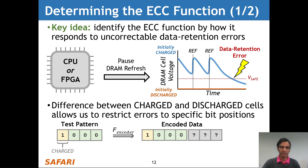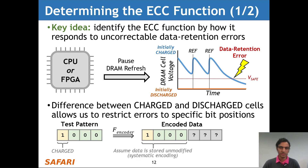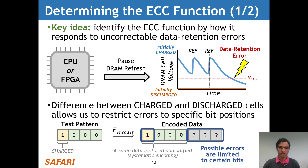This difference between charged and discharged cells allows us to restrict errors to specific bit positions. For example, consider a test pattern with only one cell charged. After ECC encoding, we have only one charged cell within the data portion and three unknown parity check bits. We assume the data is stored unmodified — corresponding to systematic encoding, which is typical of real memory devices. In this encoded data, we have effectively restricted possible data retention errors to specific bits.